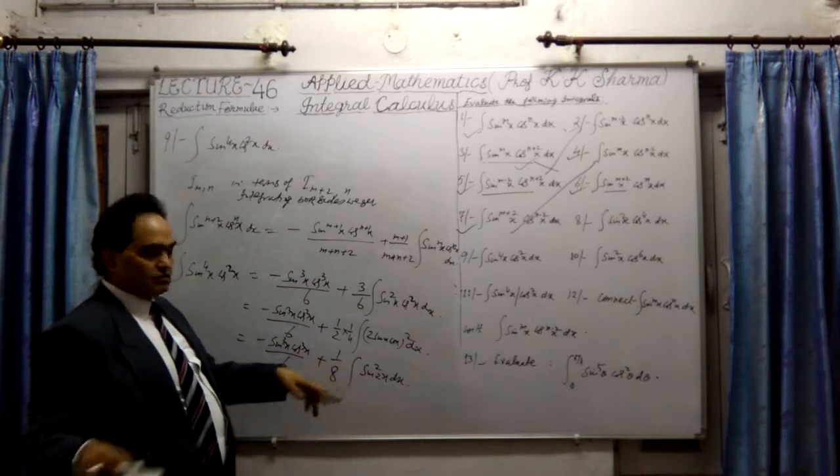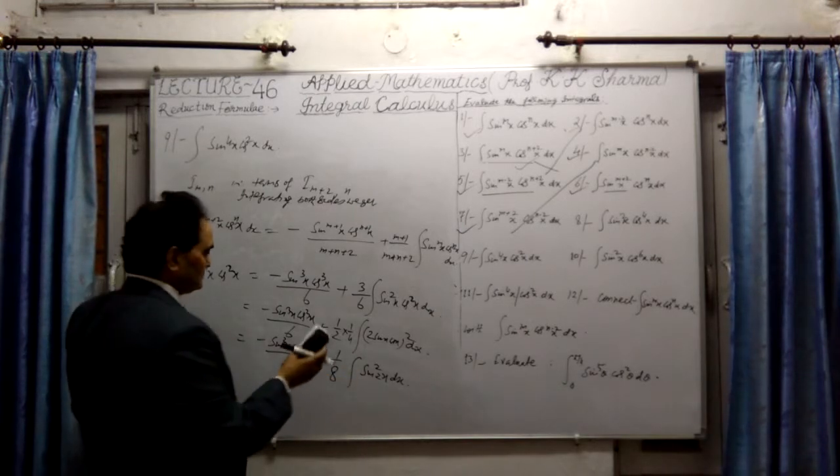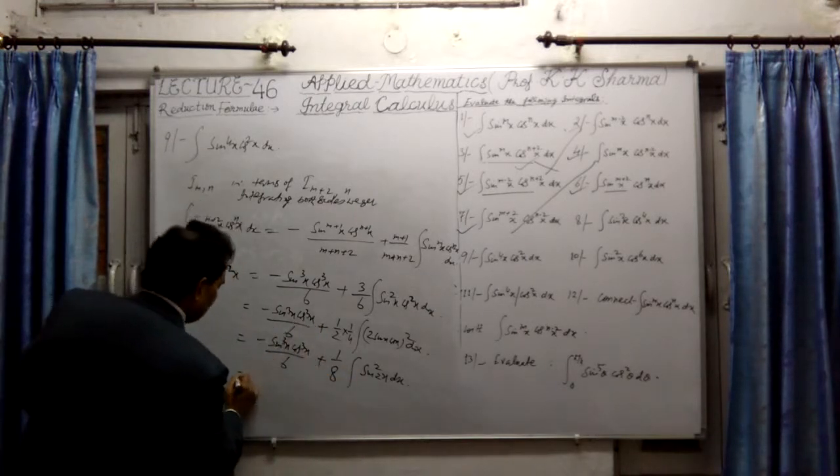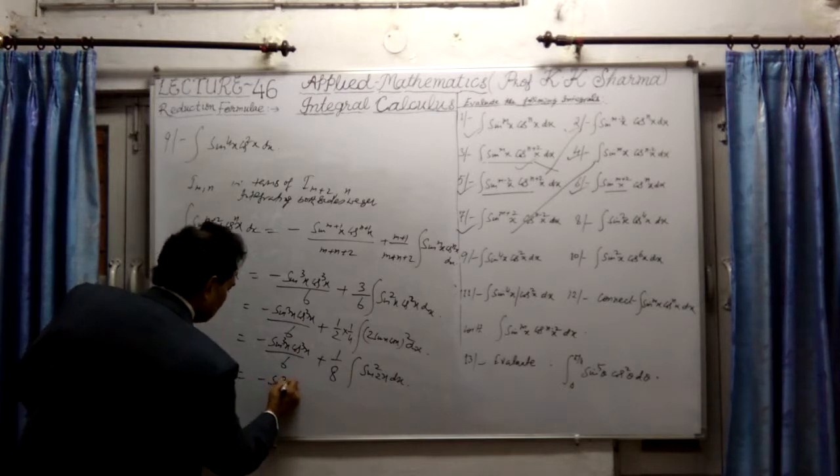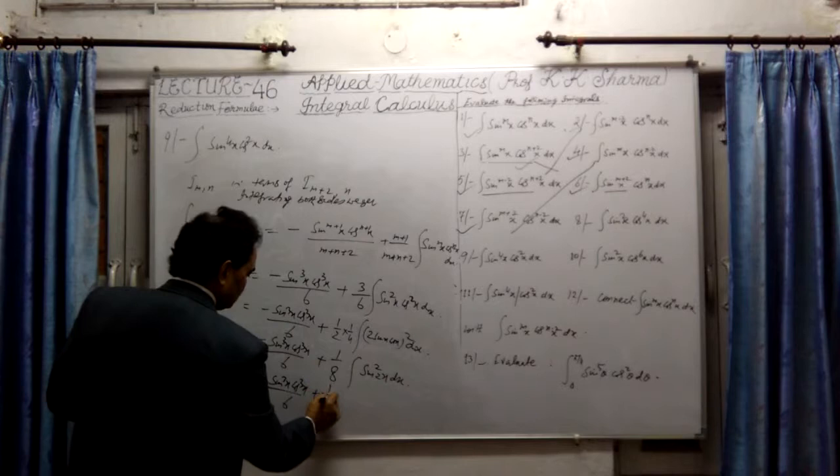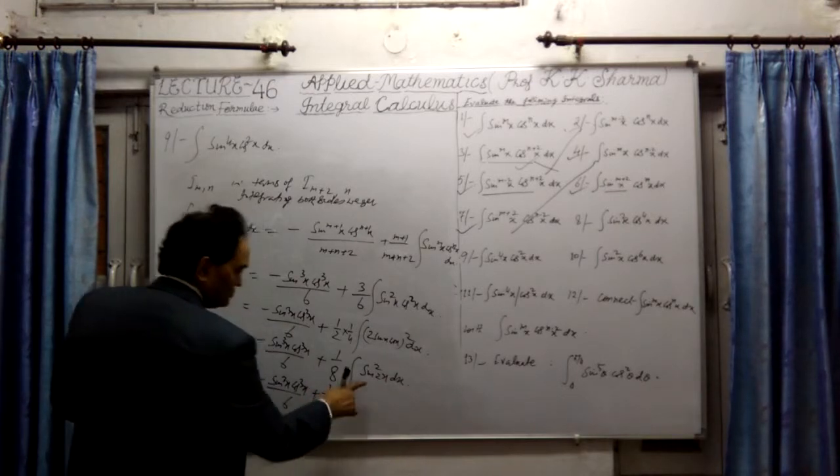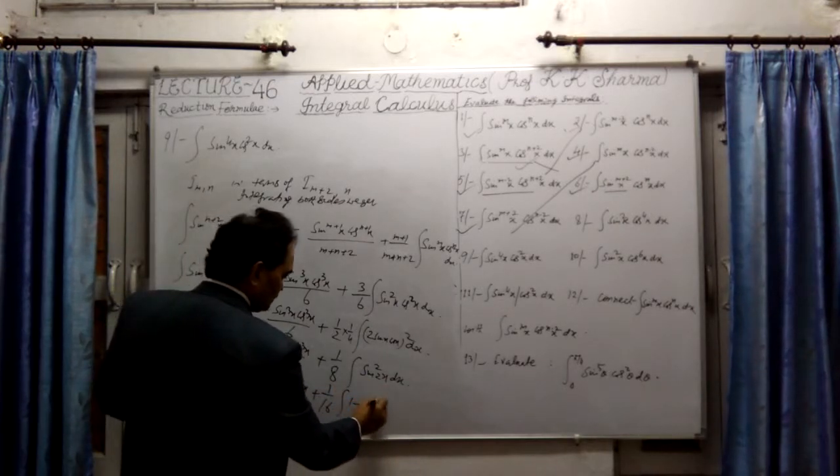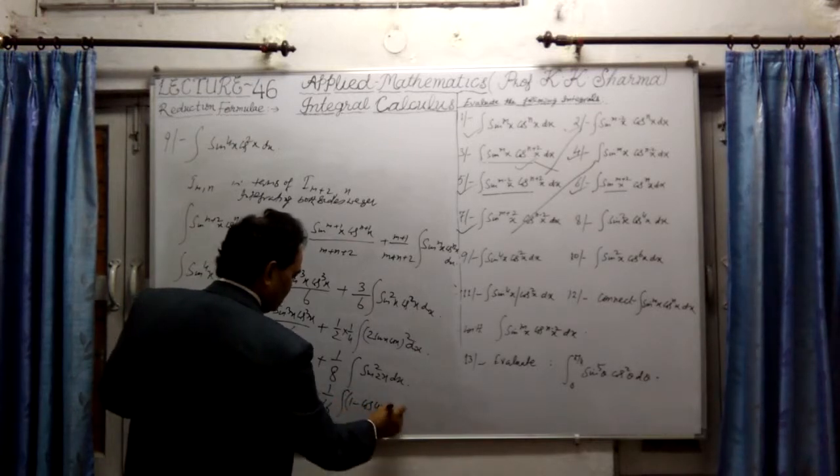It means 1.16, and 2 sine square 2x cos 2x will be what? Let me put multiplied by 2, sine 2x cos 2x. This is twice of this, 1 minus cos 4x into dx.